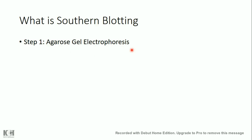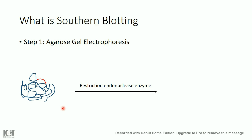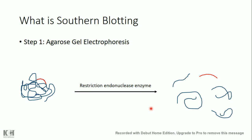First of all, the genome or the DNA sequences should be separated using agarose gel electrophoresis. But as the genome is one long chain, we should first cut the DNA, or digest it. To do so, we use enzymes called restriction endonuclease enzymes. The restriction endonuclease enzyme is going to cut the DNA in different places and produce several sequences of the genome.